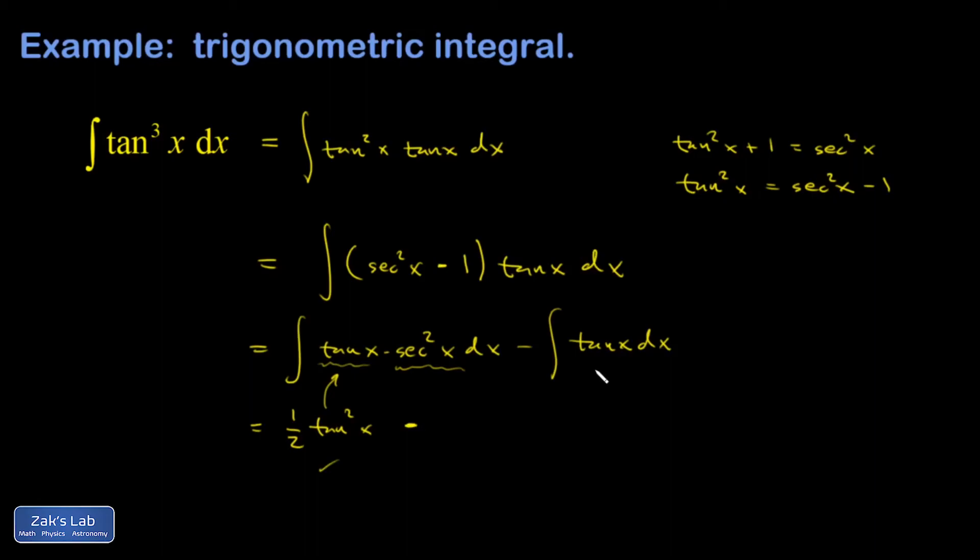But this part, maybe you just have it memorized, that the integral of a tangent is a natural log of a secant. If not, then breaking things into sines and cosines is kind of a last-ditch effort. If you can't think of anything else, you break things into sines and cosines.